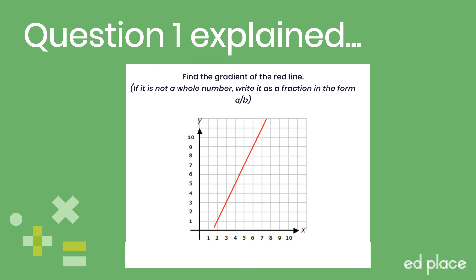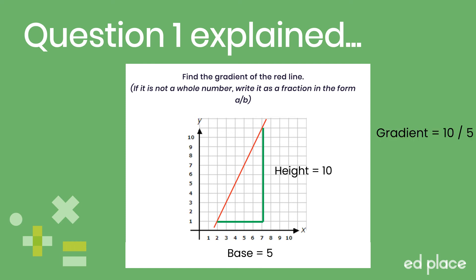Let's take a look through some of the questions you've just completed. For question one, step one is to turn your line into a right-angled triangle, making it as large as possible whilst using whole squares. Step two: count the squares to find the height and base of the triangle — the height is 10 and the base is 5. To calculate the gradient, we divide 10 by 5, so the gradient is 2.